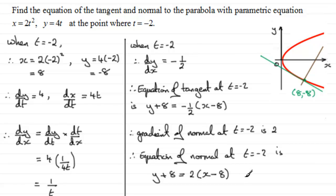So I hope it's given you an idea how we could go about this example where we've got an equation for a parabola in parametric form, and we've got to find the equation of tangent and normal when we're given the value of t.